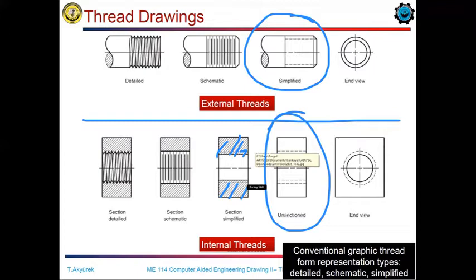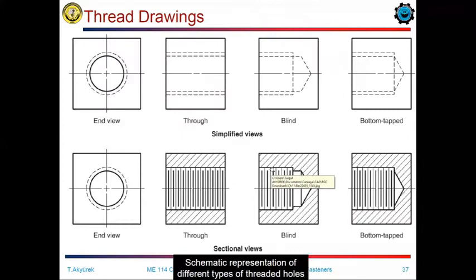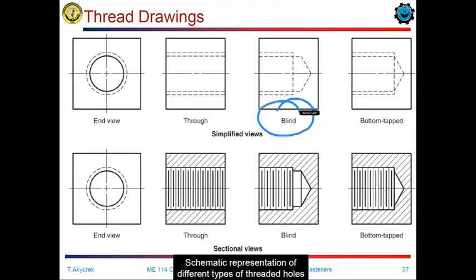In this slide, we have an internal thread representation for holes. If the hole passes through the object or a part, the thread is called a through hole or through thread. If the threaded hole does not reach to the other side of the part, we have a blind threaded hole representation. On the bottom side, you can see the section parts. If the threaded hole and the threaded portion of the hole are in equivalence, we call this type of hole a tapped bottom hole.